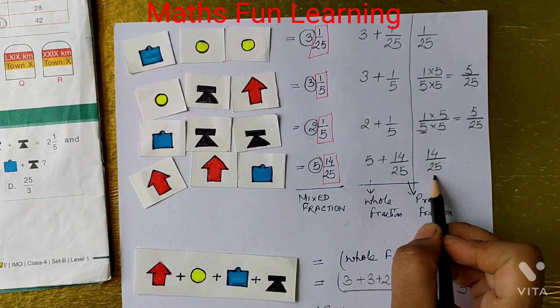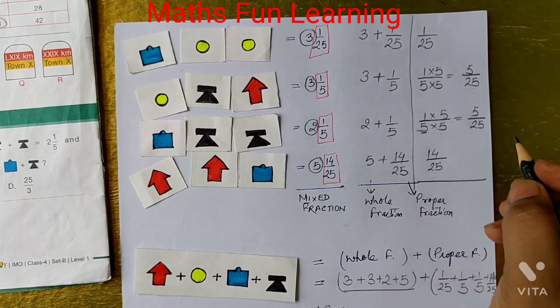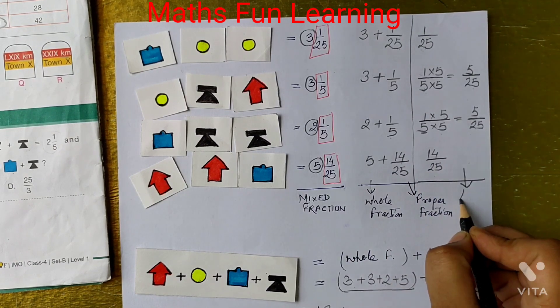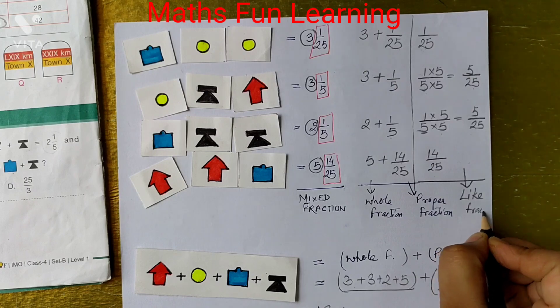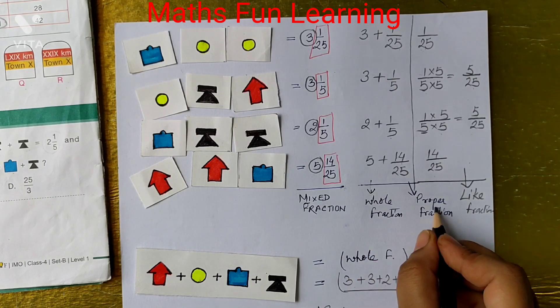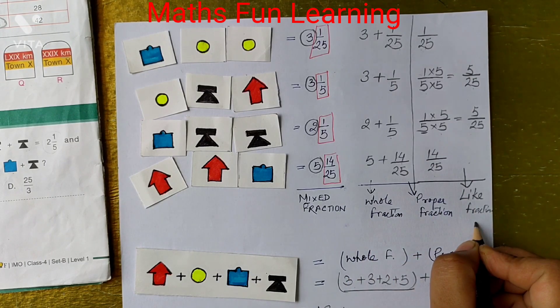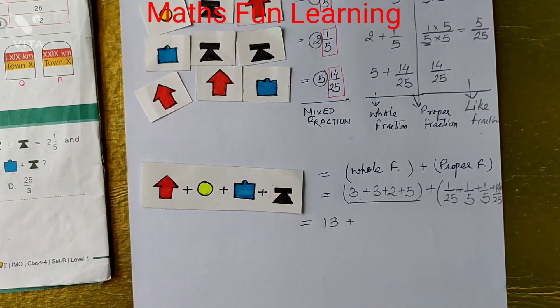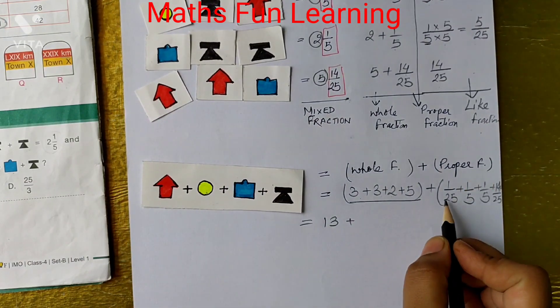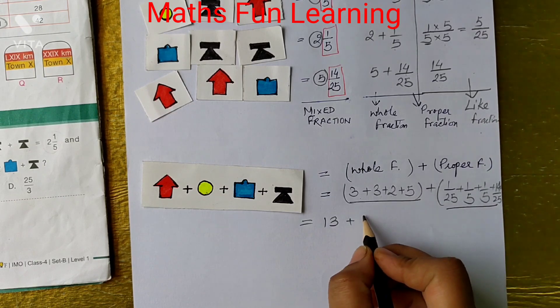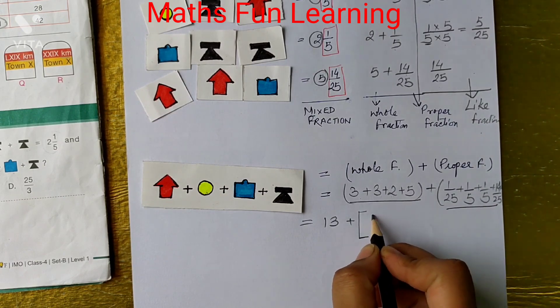Now it is 14 by 25. Now what you can see? This is also like fraction. So all are changing to the like fractions. So here kids, you understood about the whole fraction, proper fraction, like fractions as well. Now what we can do right now? We already changed this fraction to the like fraction. Now we are going to add it.